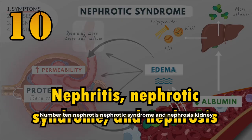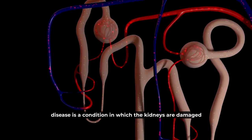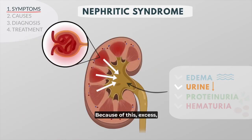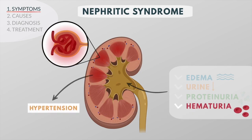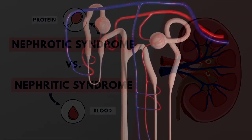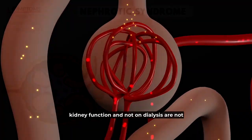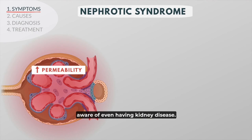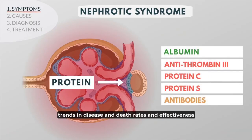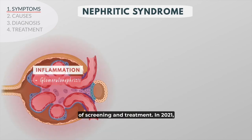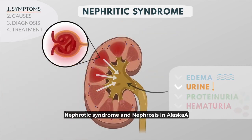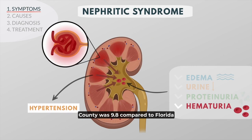Number 10: Nephritis, Nephrotic Syndrome, and Nephrosis. Kidney disease is a condition in which the kidneys are damaged and cannot filter blood as well as they should. Excess fluid and waste from blood remain in the body and may cause other health problems such as heart disease and stroke. It is estimated that 48% of people with severely reduced kidney function and not on dialysis are not aware of even having kidney disease. In 2021, the age-adjusted rate per 100,000 population of deaths from nephritis, nephrotic syndrome, and nephrosis in Alachua County was 9.8 compared to Florida.